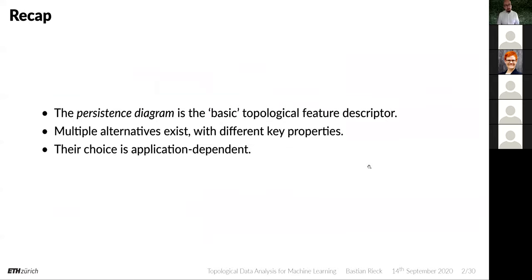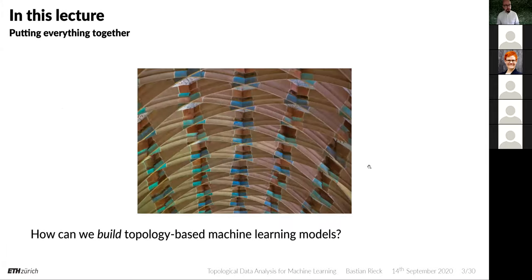As a recap, we saw that persistence diagrams are the basic or natural topological feature descriptor. They have some disadvantages but also some neat properties. There are multiple alternatives depending on the applications you want to solve, all with different key properties. In essence, everything boiled down to saying it's your data and it should be your choice of descriptor. Now let's take a look at what people have actually done in this field.